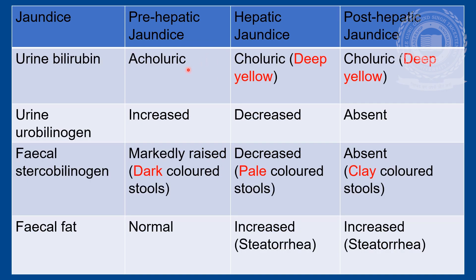In pre-hepatic jaundice, no bilirubin is passed in urine — the condition is called acholuric — as only unconjugated bilirubin is raised. In the other two types, raised conjugated bilirubin imparts deep yellow colour to urine, a condition called choluria. Urine urobilinogen levels are increased in pre-hepatic jaundice and decreased in hepatic and post-hepatic jaundice. Fecal stercobilinogen levels are markedly raised in pre-hepatic jaundice, providing dark colour to stools; decreased in hepatic jaundice, providing pale colour; and totally absent in post-hepatic jaundice, providing clay colour to stools.